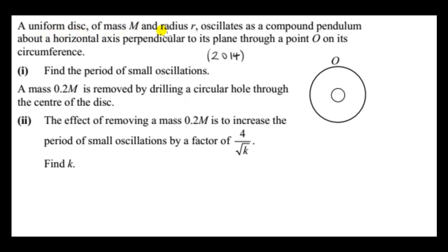A uniform disc of mass M and radius R oscillates as a compound pendulum about a horizontal axis perpendicular to its plane through a point O on its circumference. Find the period of small oscillations. To do that, we first get the moment of inertia of the uniform disc about its center of mass. Since it's uniform, its center of mass would be the geometrical center of the disc, which we'll call point C.